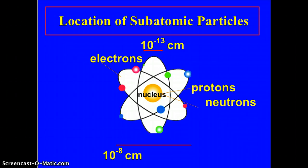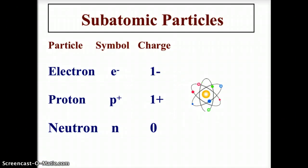How small are we talking about? The nucleus has a diameter of 10 to the negative 13 centimeters — that's a decimal point followed by 12 zeros and then a one. The average atomic diameter is about 10 to the negative 8 centimeters. To put that in perspective, if you look at the edge of a piece of paper, it would take approximately one million atoms lined up side-by-side to equal the thickness of that paper.